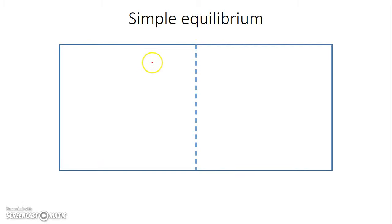Let us start by understanding the simple equilibrium across a semipermeable membrane. These are two compartments, compartment A and compartment B, separated by a semipermeable membrane which allows all the ions to pass through.